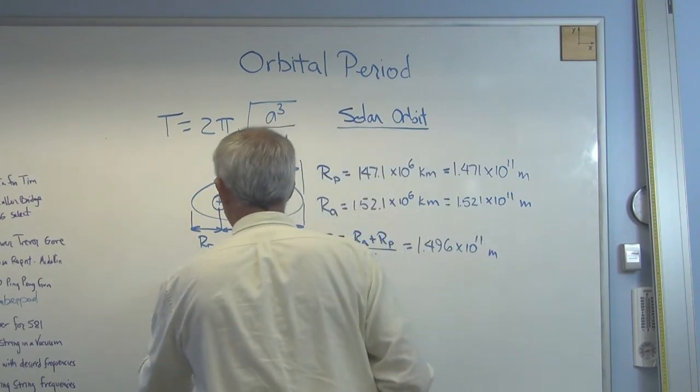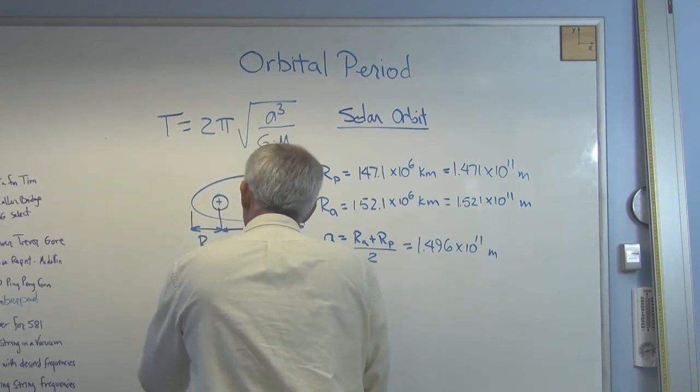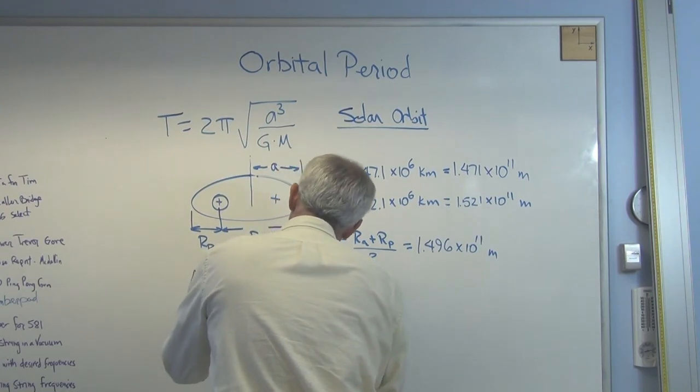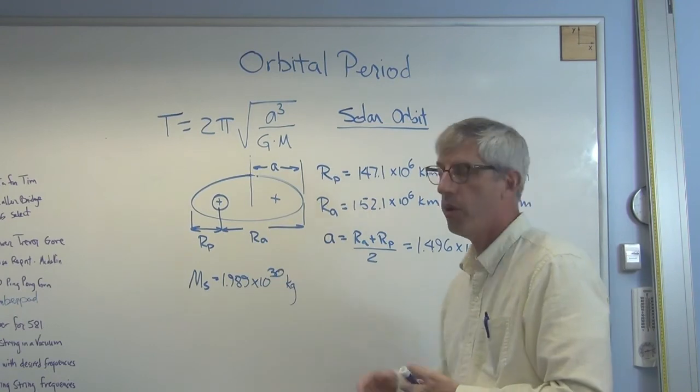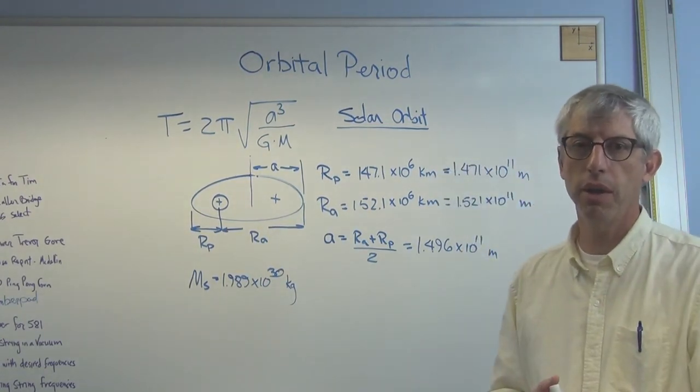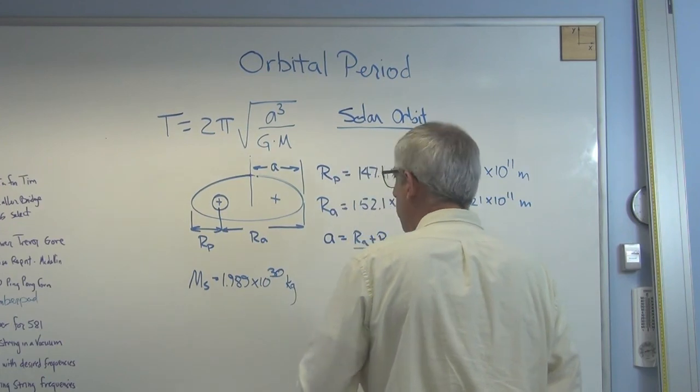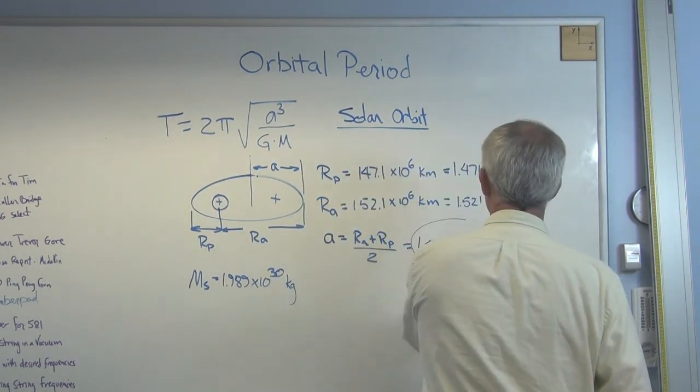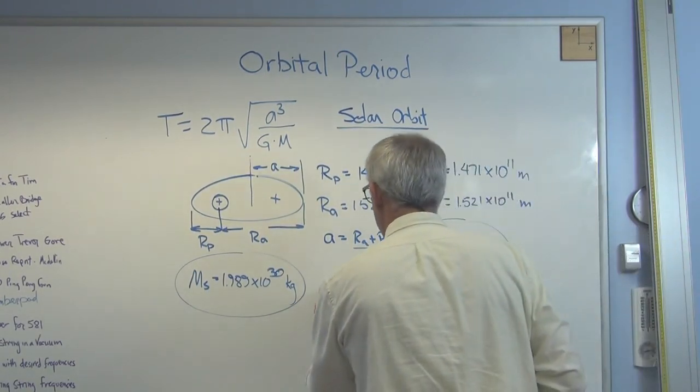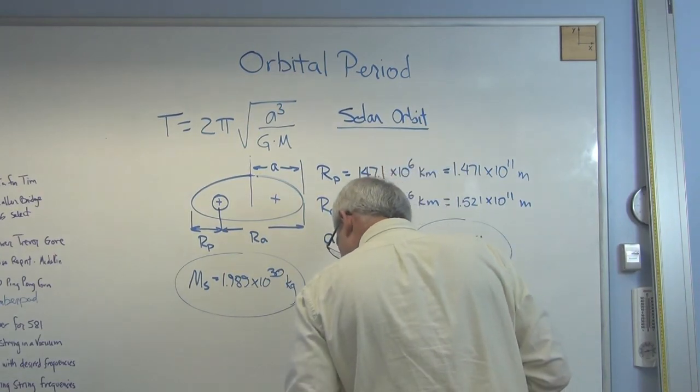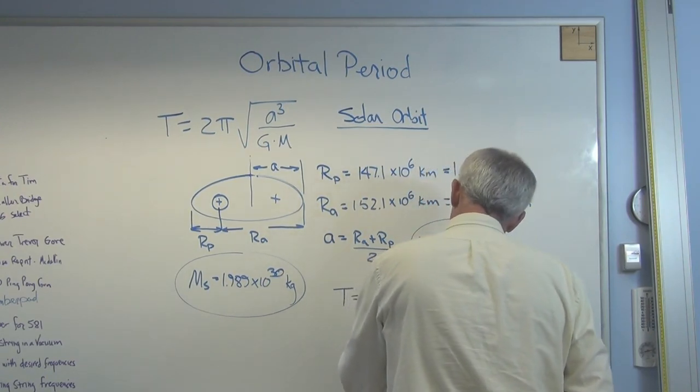So the last thing I need is the mass of the sun. Obviously a really big number. 1.989 times 10 to the 30th kilograms. The mass of the earth is 10 to the 24th, so the mass of the sun is around a million times higher than the mass of the earth. Which makes sense. Because the mass of the sun is much higher than anything else in the solar system. If you put this number here, this number here, and the universal gravitational constant into that equation, it comes out to 3.1555 times 10 to the 7th seconds.